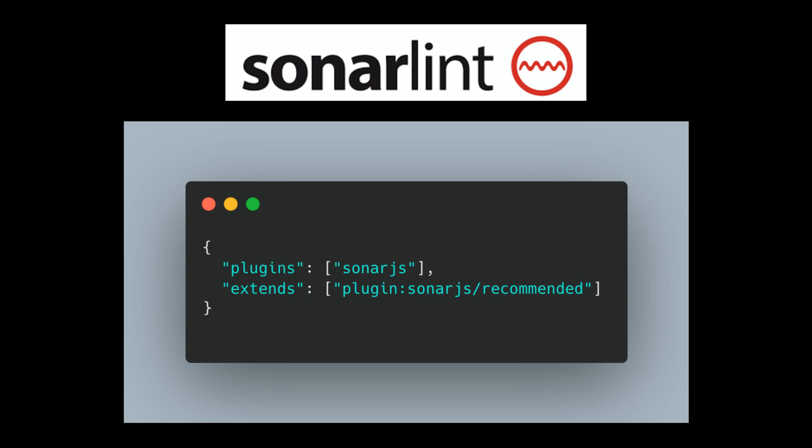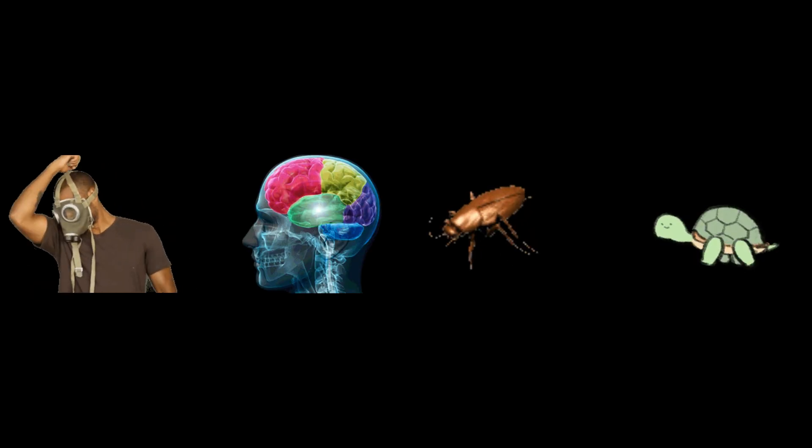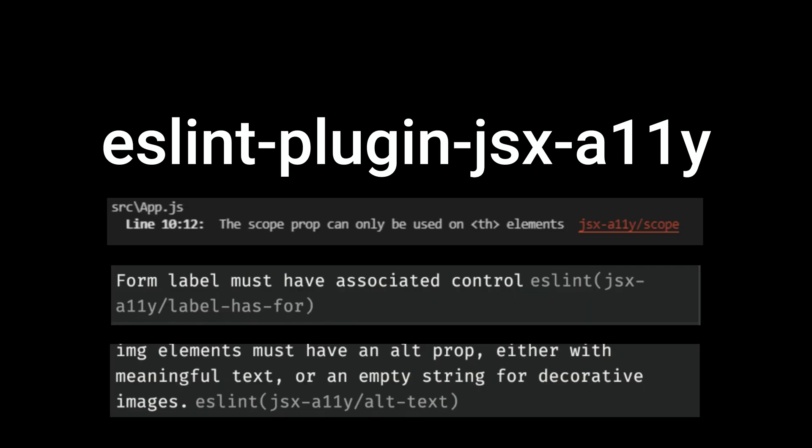SonarLint plugin has a set of rules and allows you to detect bugs and suspicious patterns in your code. It can detect code smells, improve cognitive complexity of your files, detect bugs, and find performance bottlenecks.